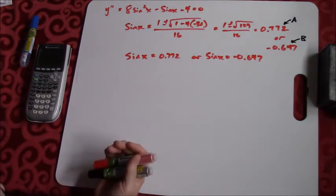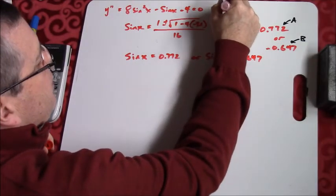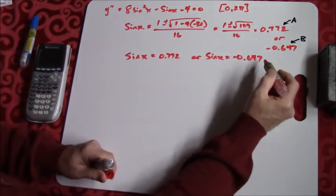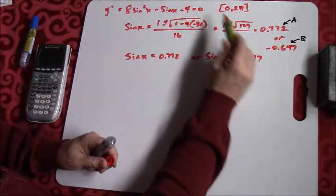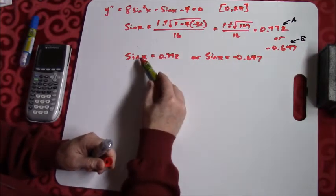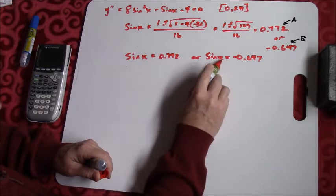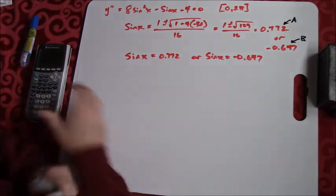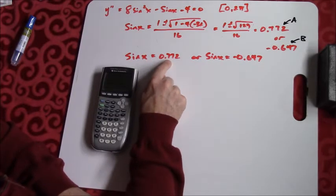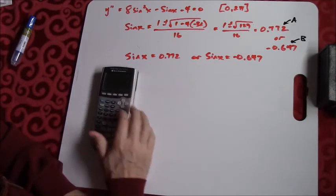In our book they give a range of values — they wanted us to take the interval from 0 to 2π, which means I only want positive angles from 0 to 2π. Remember, these aren't angles yet — this is what the sine is equal to. It's the x value I'm really trying to solve for. So now I'm going to do inverse sine; since 0.772 is stored in A, I'll go second sine of A.